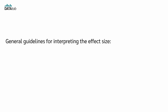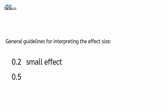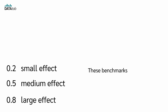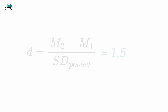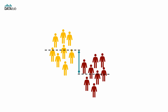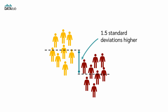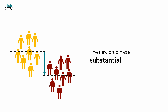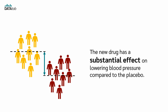Cohen proposed general guidelines for interpreting d: 0.2 indicates a small effect, 0.5 a medium effect, and 0.8 a large effect. These benchmarks are not strict rules but provide a rough idea of the magnitude of the effect. In our case, a Cohen's d of 1.5 indicates a very large effect size — the mean reduction in blood pressure in the drug group is 1.5 standard deviations higher than in the placebo group, suggesting the new drug has a substantial effect on lowering blood pressure compared to the placebo.